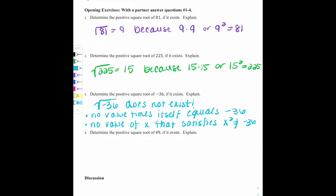Number 4, determine the positive square root of 49 if it exists. So if I take the square root of 49, it is 7, and that's because 7 times itself, or 7 squared, equals 49.